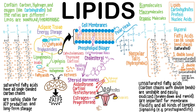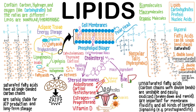In the skin, cholesterol is converted into vitamin D only in the presence of UV light from the sun. Lastly, cholesterol is the main ingredient in bile, which is made in the liver, stored in the gallbladder, and then released into the intestine to emulsify dietary fats.